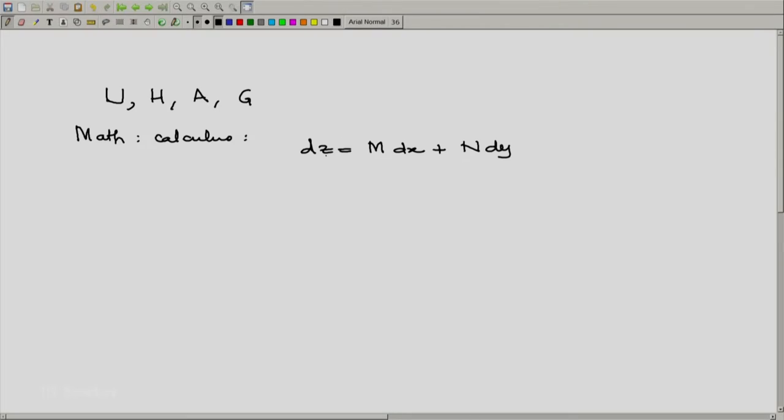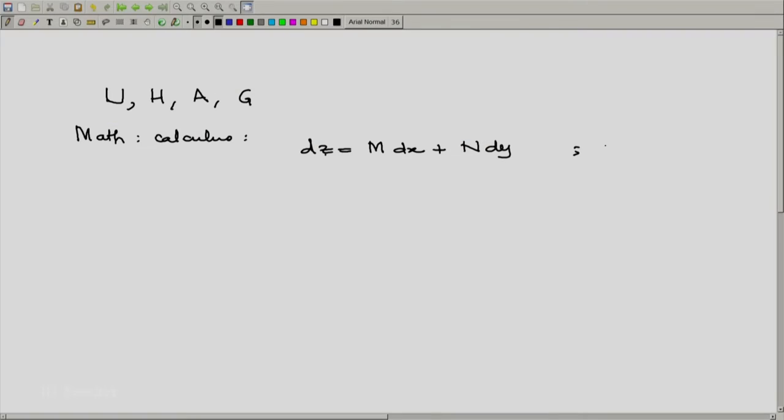In our case, z, x and y will be properties and so will m and n. And because z and all other functions which come into here are properties, their differentials are exact differentials because z is a proper function of x and y.